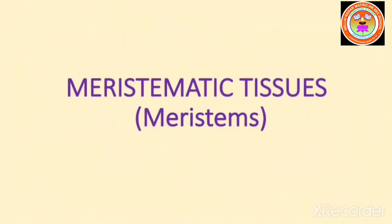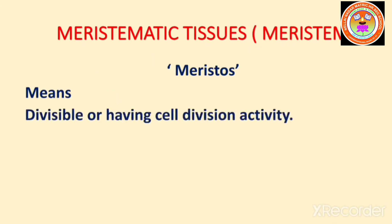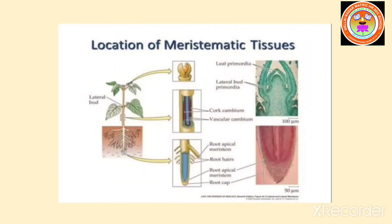Meristematic tissue, or meristems: the term meristem is derived from the Greek word 'meristos', which means divisible or having cell division activity. Meristematic tissue is a group of immature cells that are capable of undergoing cell division. In plants, meristem is found in zones where growth can take place — for example, the apex of the stem, root, leaf primordia, vascular cambium, and cork cambium.